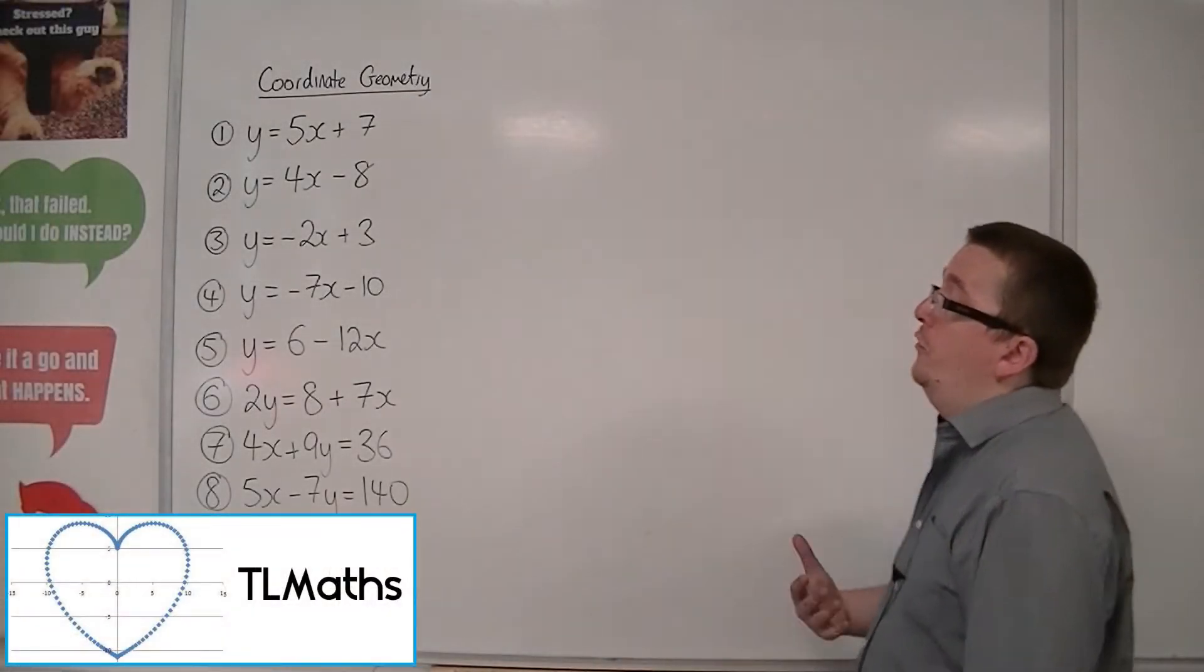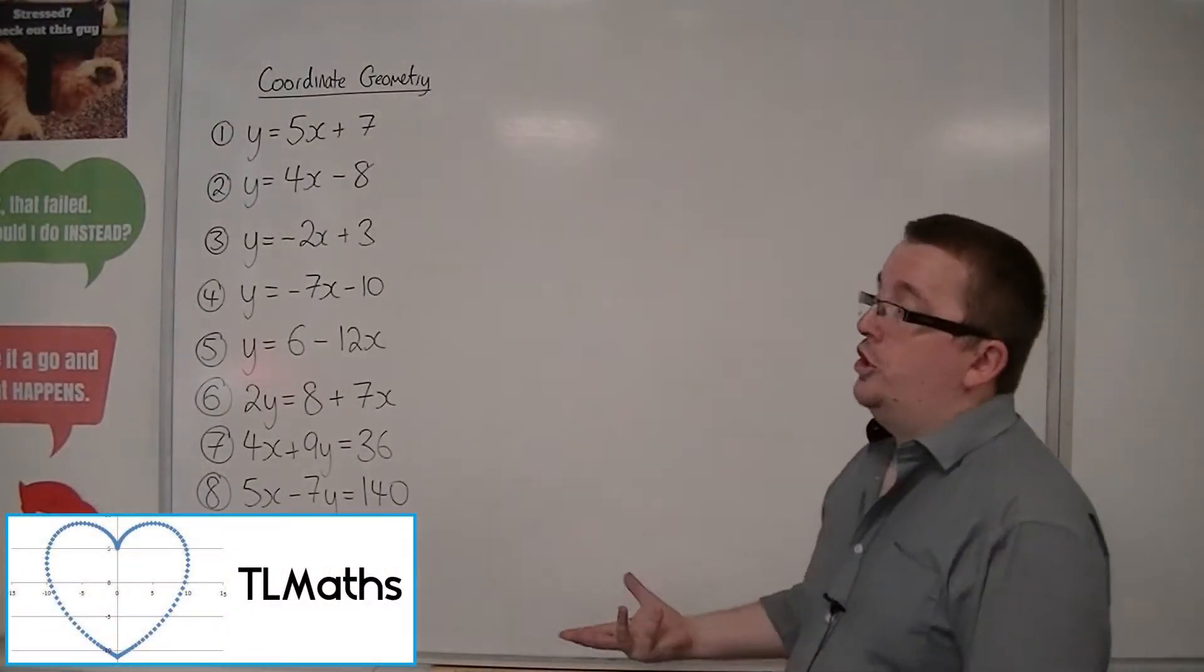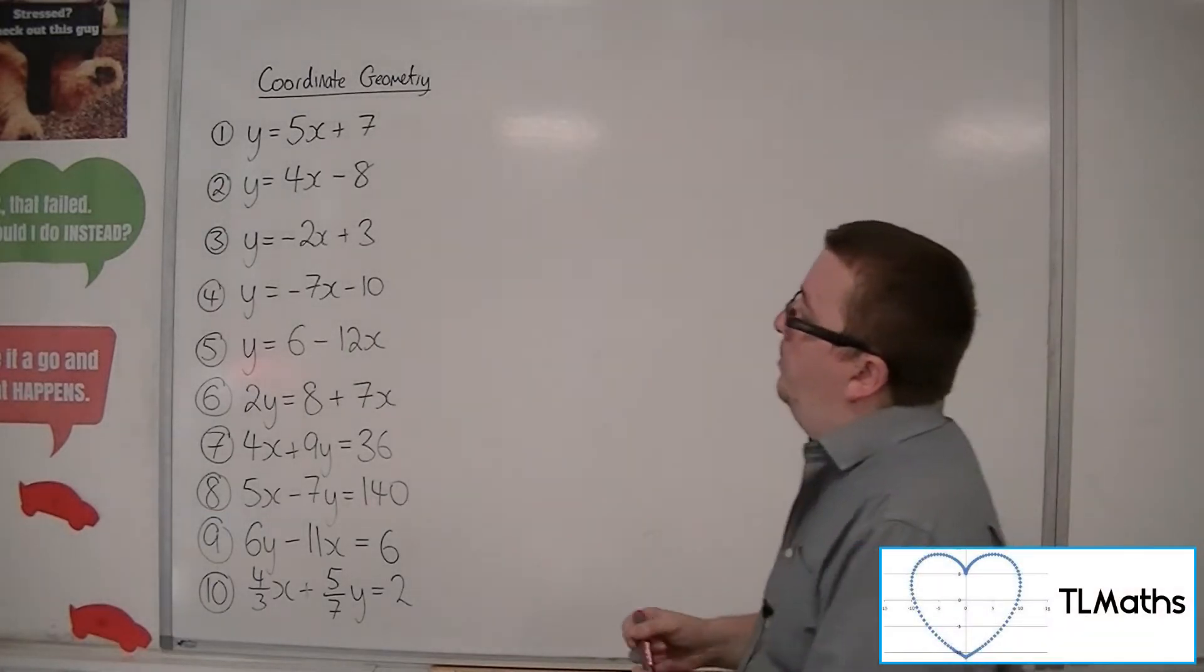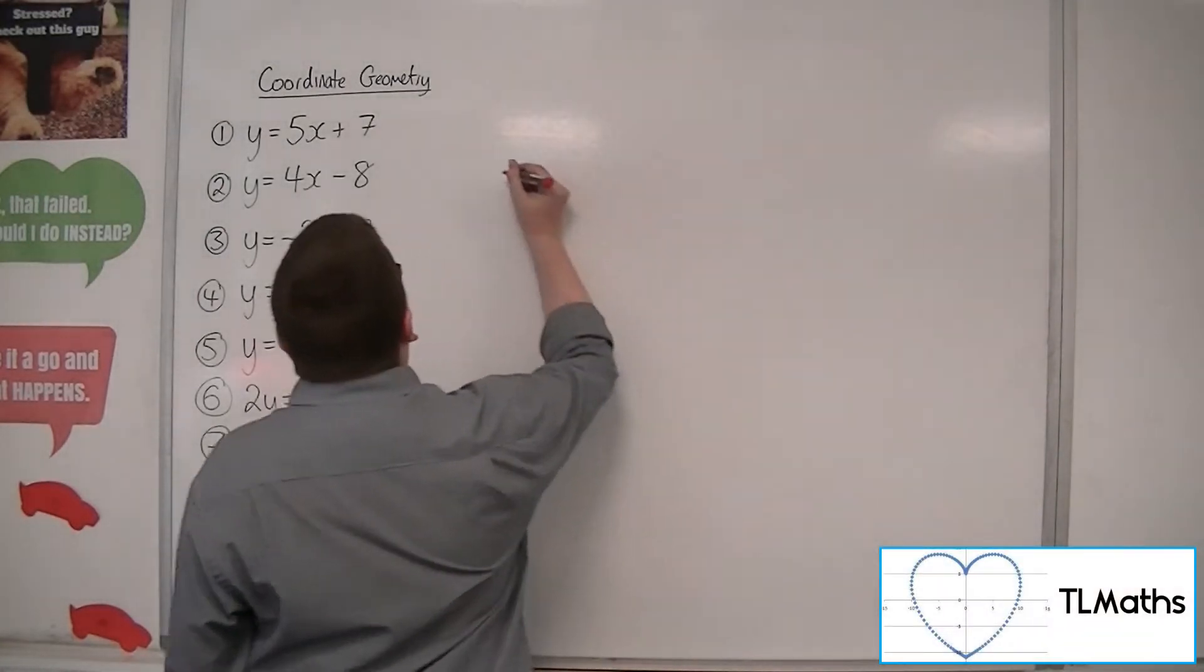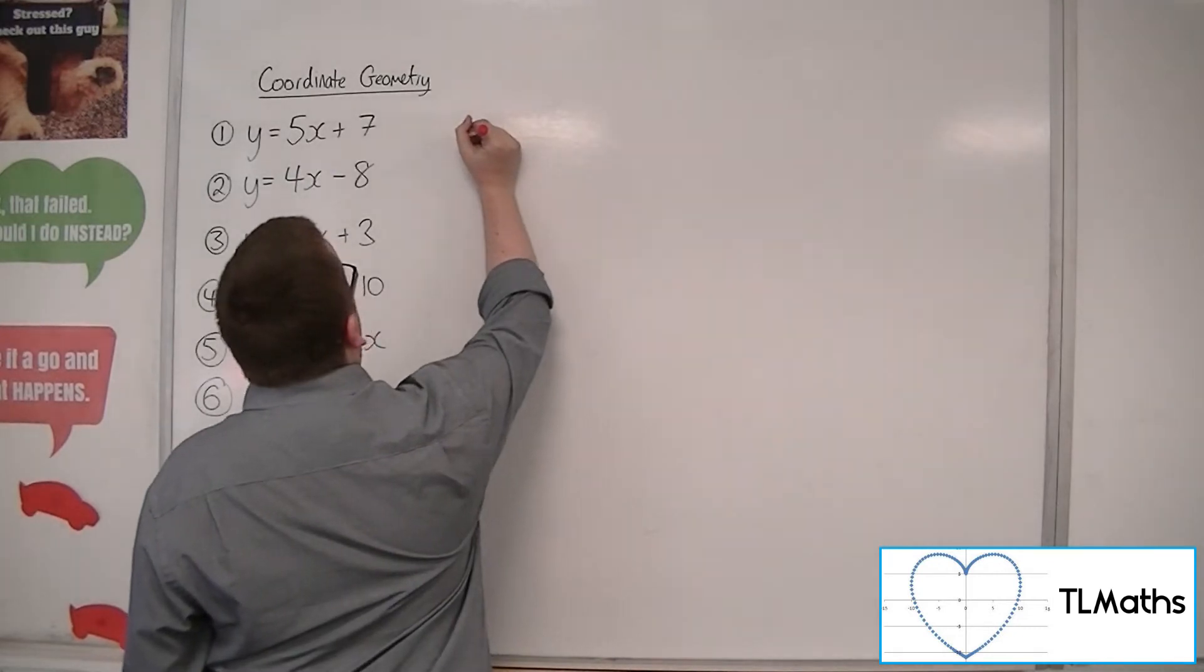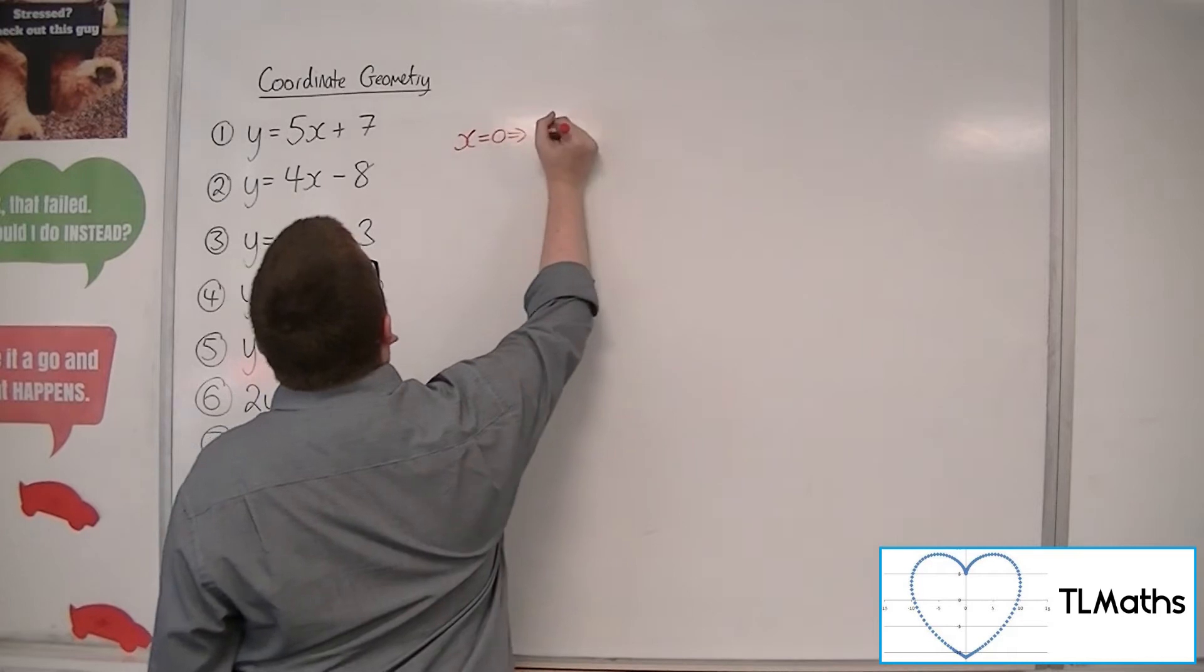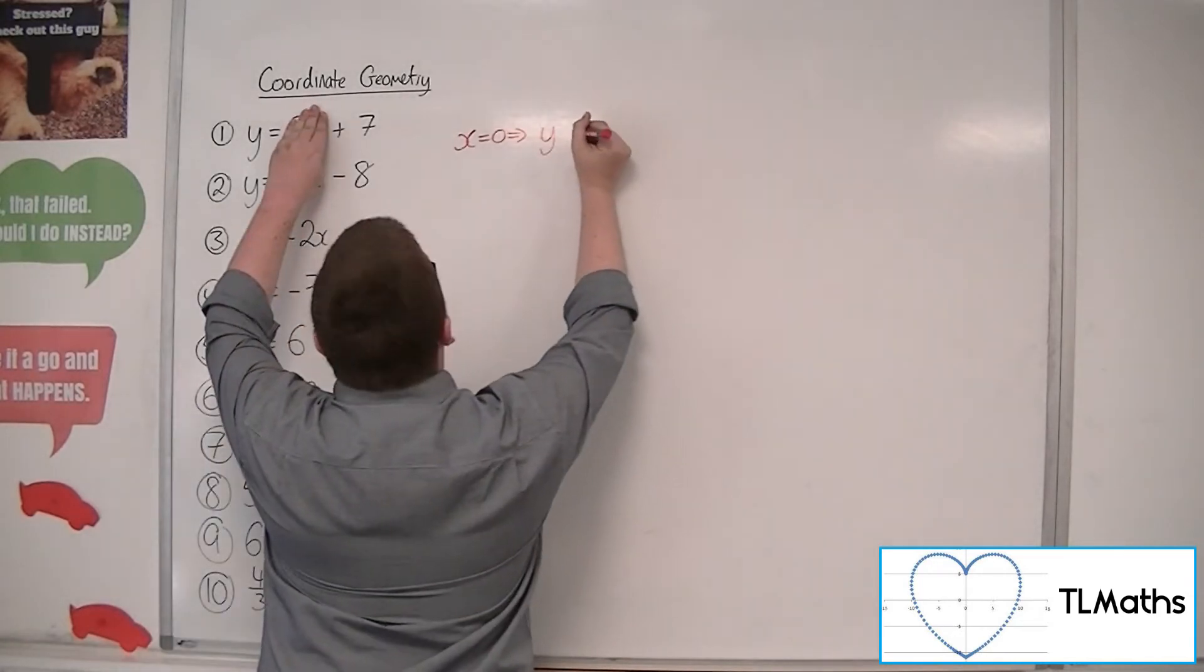Okay, so in this video we're going to go through some examples of sketching straight lines. So if we go first for y equals 5x plus 7, then you can go through the process of finding where it crosses the y-axis when x is 0. And so y would have to be 7.